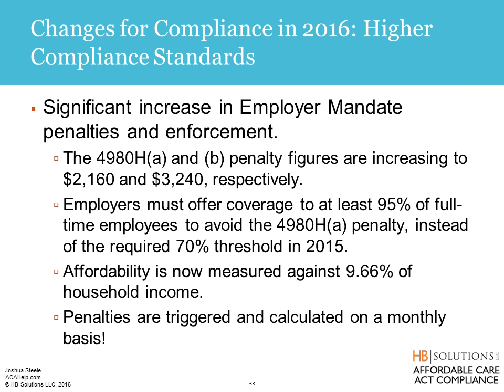Changes in compliance for 2016: significant increase in employer mandate penalties — the A and B penalty figures are increasing to $2,160 and $3,240 respectively. They will continue to increase until those penalties equal the average premium cost in the United States. The biggest change with respect to the mandate is that last year we only had to offer coverage to 70% of full-time employees; this year that's up to 95%, which is what the regulations originally stated. We had some transition relief — now it's 95%, much harder to comply with and much easier to accidentally fall below that percentage.